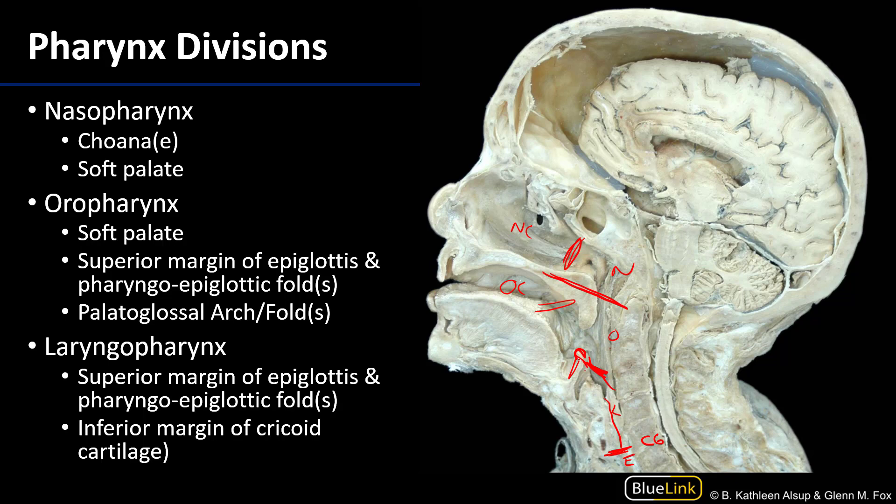That's where the laryngopharynx turns into the esophagus. Anteriorly, there's also the laryngeal inlet — the space through which air can be communicated between the laryngeal vestibule and the laryngopharynx.